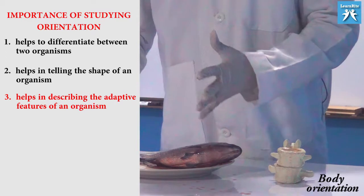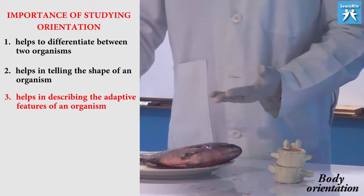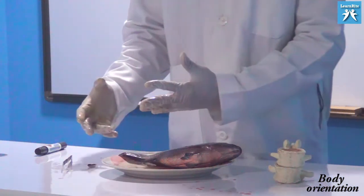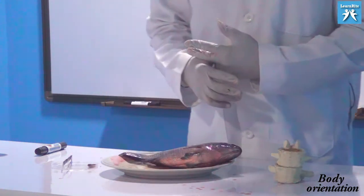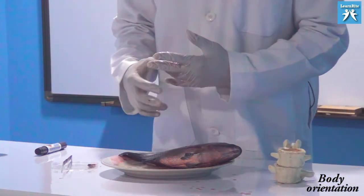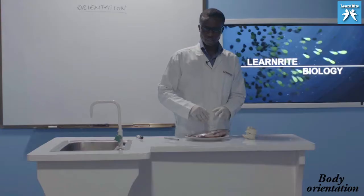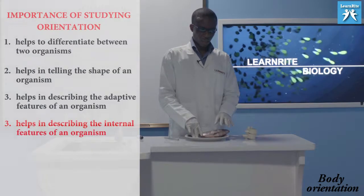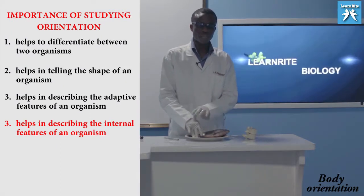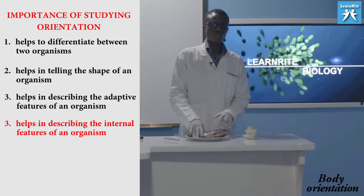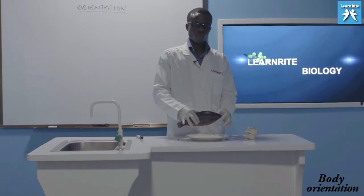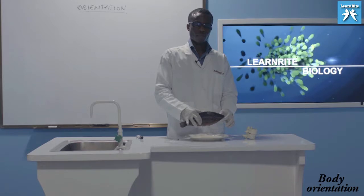This topic also helps you to describe the adaptive features of organisms. The cockroach is dorsoventrally flattened — an adaptive feature that helps it escape danger. Because it is dorsoventrally flattened, it can pass through narrow places where organisms such as a grasshopper cannot. It can also help you describe the external features of an organism in an examination — for example, tilapia is laterally flattened.